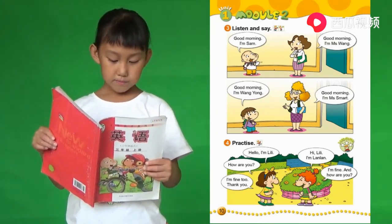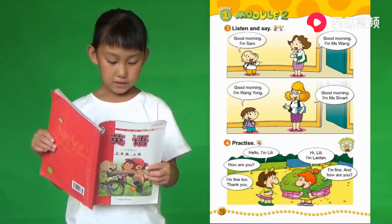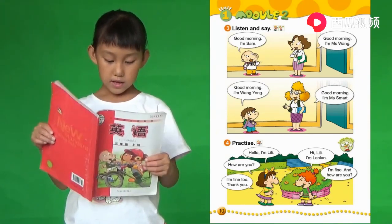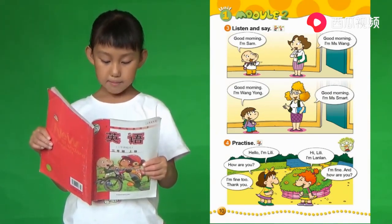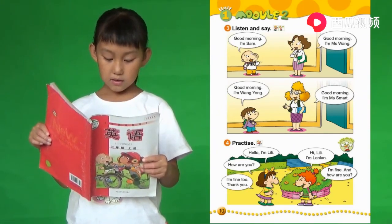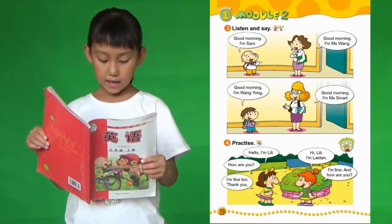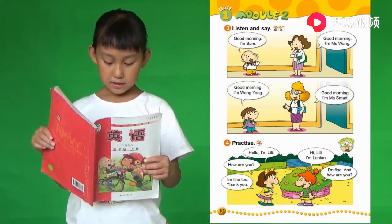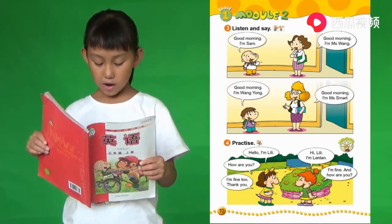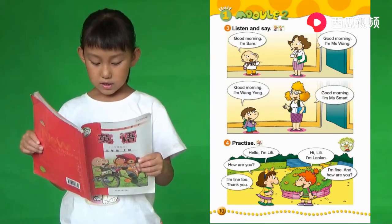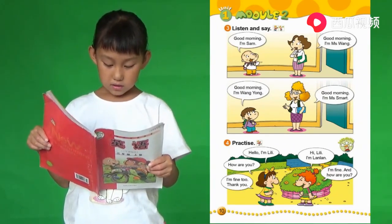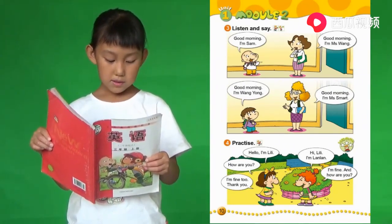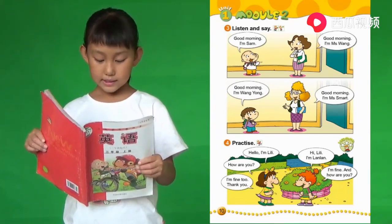4 Practice. Hello, I'm Lily. 你好。Hi, Lily, I'm Lian. 你好Lily，我是蓝蓝。How are you? 你好吗？I'm fine. And how are you? 我很好，还有你？I'm fine too. Thank you. 我也很好，谢谢你。